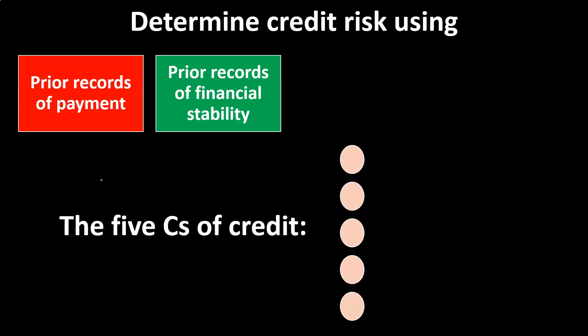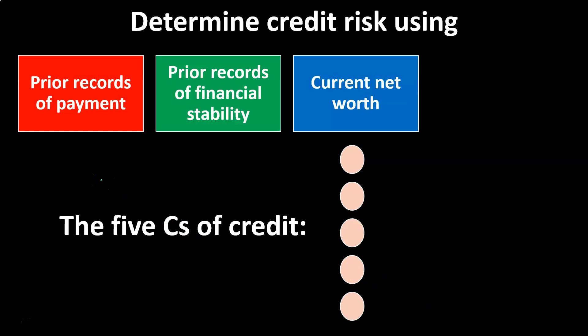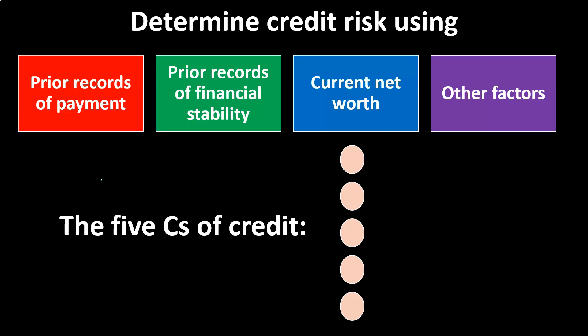We might look at prior records of payments, prior records of financial stability, current net worth, and other factors. The type of service or product we're selling also determines how strict our credit policy should be. The tighter our credit policy — meaning someone has to jump through more hoops to make a purchase on account — the fewer sales we'll likely make, but we'll be collecting on a higher percentage of them because we're more confident we're dealing with people who are legitimate and have the capacity to pay.